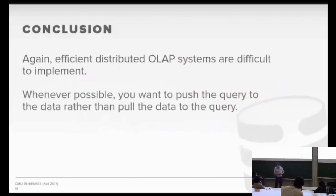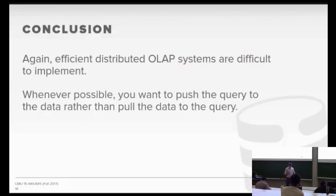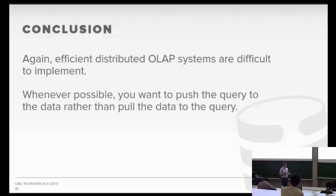That's pretty much the coverage for OLAP systems. Building an efficient OLAP system is hard — the network is always the main bottleneck. All the techniques we talked about for single-node systems apply here: pick the right join ordering so you filter things out as early as possible and aren't moving all this data around. A join ordering that's efficient given one partitioning scheme might not be efficient for another. There's just more information to take into consideration during query planning and scheduling than in a single-node system.